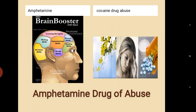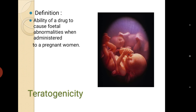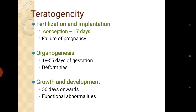The next adverse effect is teratogenicity — when a drug is prescribed to a pregnant woman, it crosses the placenta and reaches the fetus, causing abnormalities. Teratogenicity occurs in three stages of pregnancy: first, fertilization and implantation (conception to 17 days) — causes failure of pregnancy; second, organogenesis (18 to 55 days of gestation) — may cause deformities; third, growth and development stage (56 days onwards) — causes functional abnormalities.